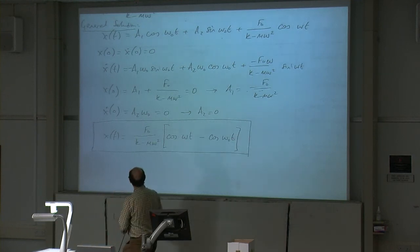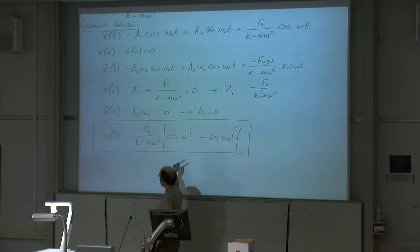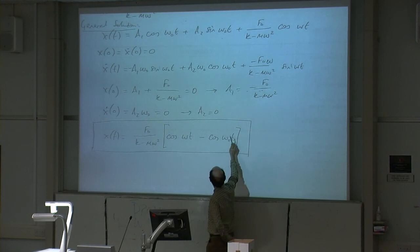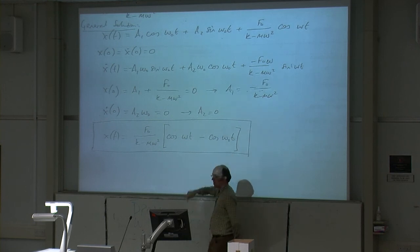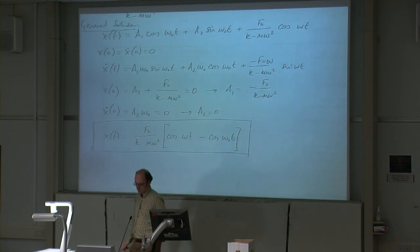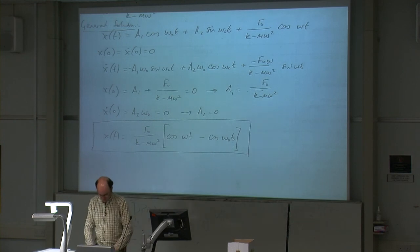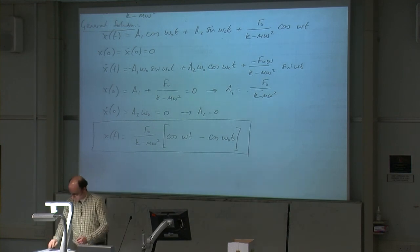You can see that this solution is slightly different from the case where you had sine as the forcing function. Where you had sine, there was a sine term multiplied by a factor of omega divided by omega-naught. So the solution is slightly different depending on whether your forcing function starts as a sine or a cosine.